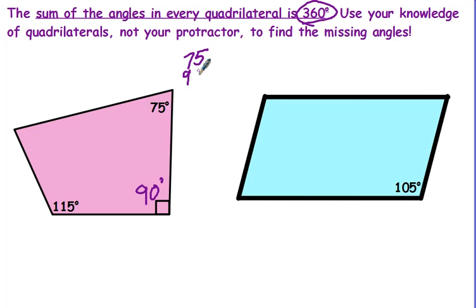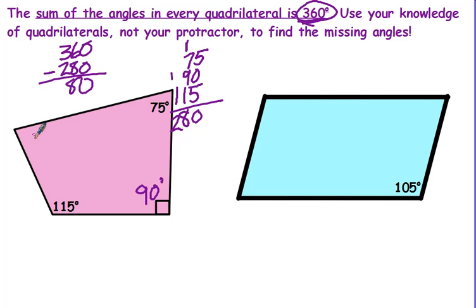You would add those up, 75, 90, and 115, adding those 10, 18, 280 degrees. Now, there's 360 in every quadrilateral, so 360 minus 280 gives us 80 degrees. So the missing angle is 80 degrees.